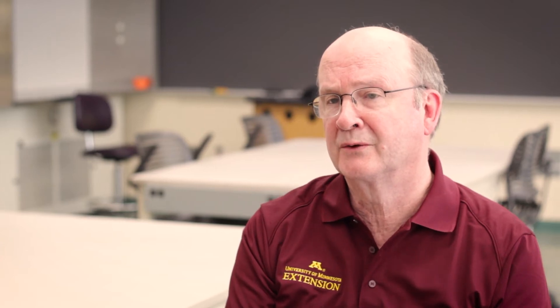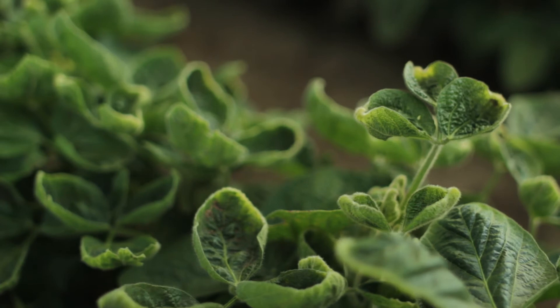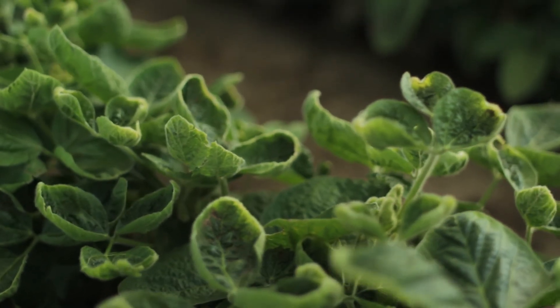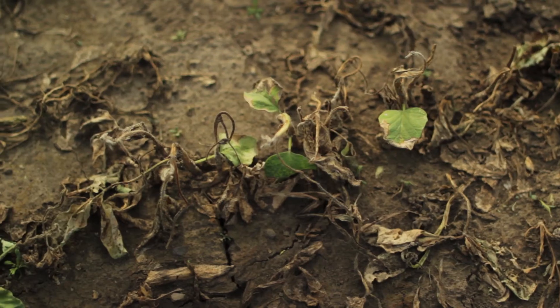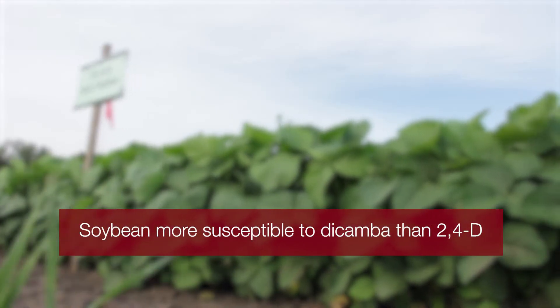Soybeans are actually very sensitive to the plant growth regulator herbicides. Many growers have experienced cupping on soybean plants during the growing season, usually near fields adjacent to corn that have been sprayed with a growth regulator herbicide — which was the common use prior to herbicide resistant technology. Soybeans are more sensitive to dicamba than to 2,4-D, but that's not to discount the importance of either one as far as off-target movement.